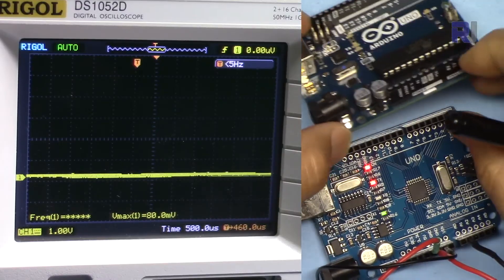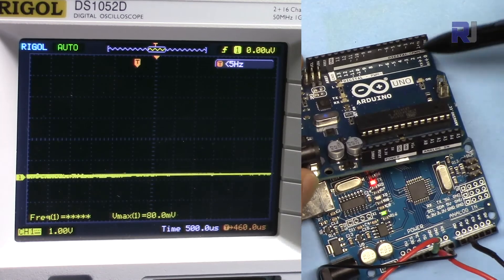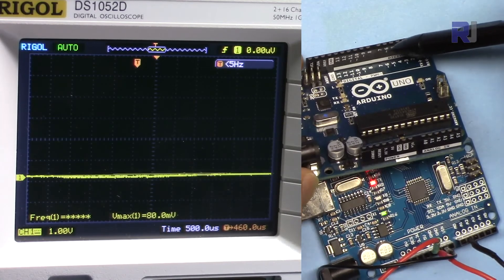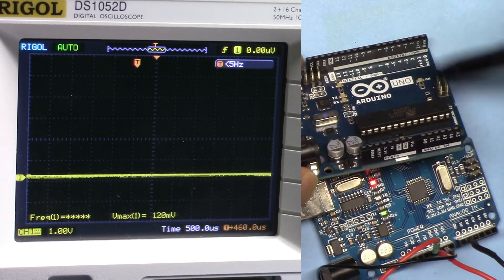So for conclusion, we can say that for Arduino Uno, the frequencies on pins 5 and 6 is 980 Hertz, and pins 3, 9, 10, and 11 is 490 Hertz.